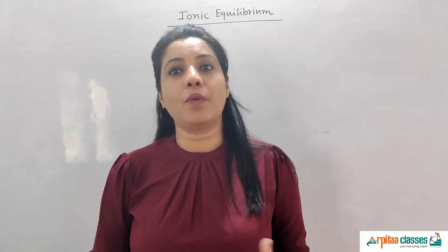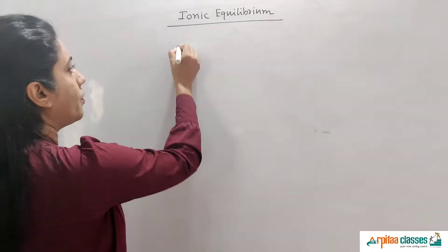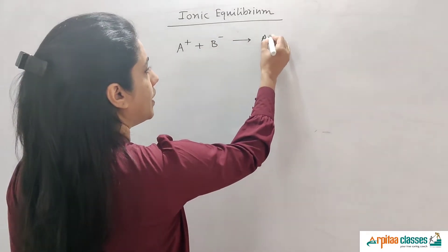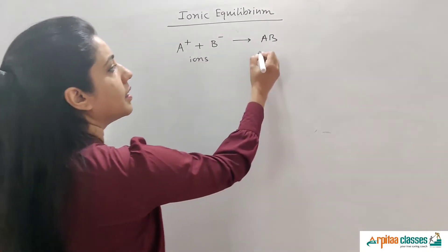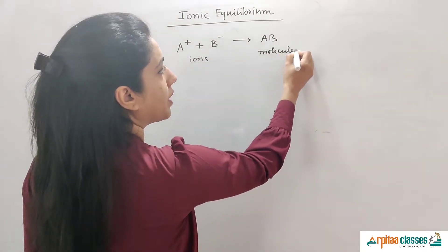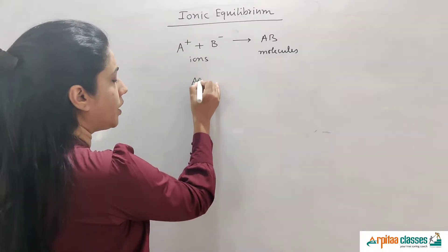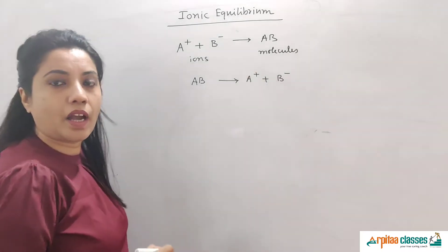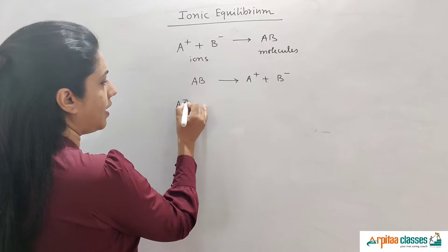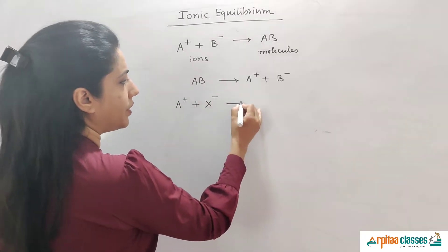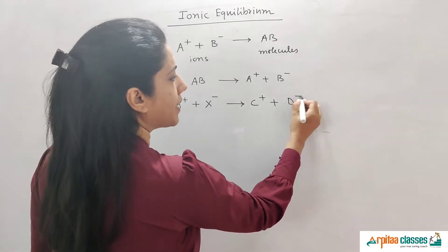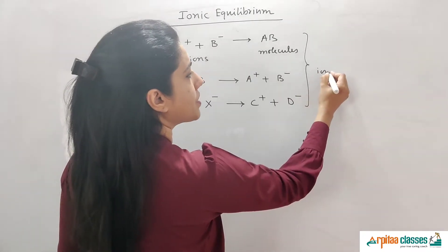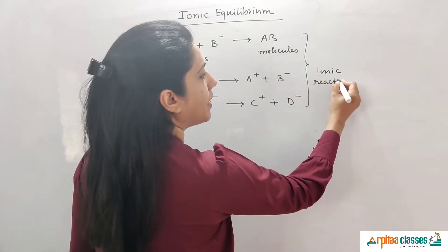This is Arvita Balanchi and you are watching Arvita Classes. In ionic equilibrium, ions are combined together to give you a molecule, or any molecule is dissociated to give you ions, or maybe any two ions combine together to give you some different ions. All these types of reactions are called ionic reactions.